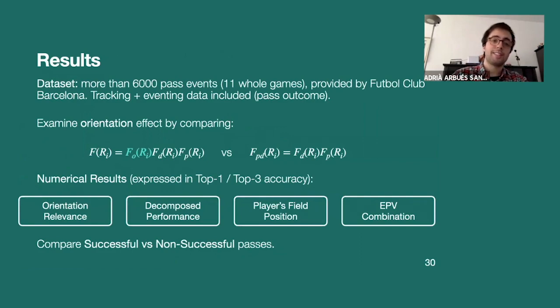We use a dataset with more than 6,000 pass events that was provided by FC Barcelona. And we want to check the effect of adding orientation. So we're going to compare two different types of feasibilities. The first one uses orientation, the second one doesn't. And we'll express the numerical results in top one and top three accuracy. So top one accuracy just means that if the player that received the ball was the one that we predicted that had higher feasibility, then it's correct. Top three accuracy is more or less the same. So if the player that received the ball was in our top three feasibilities, it's also correct. So we're going to see different scenarios. And then what we want to do is compare successful against non-successful passes. And in particular, we would like to see that orientation produces boosts in successful top one and top three accuracies and drops in non-successful passes.